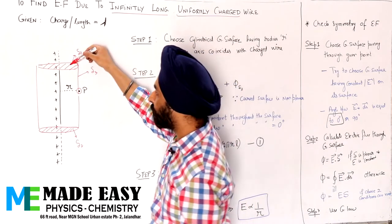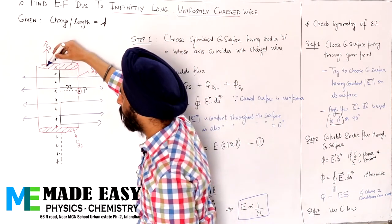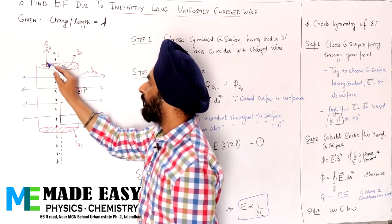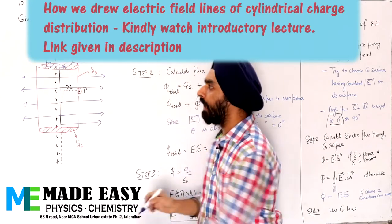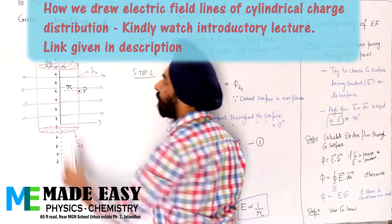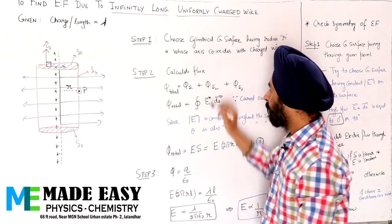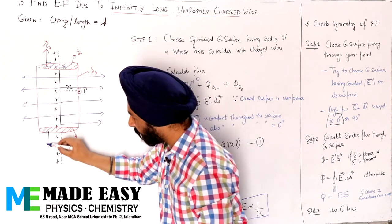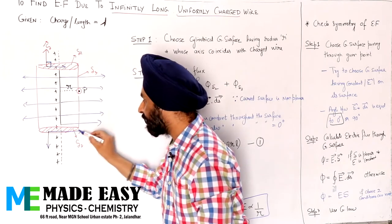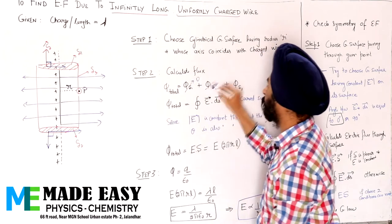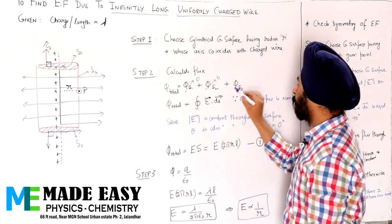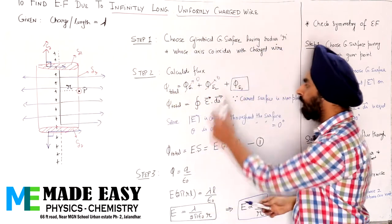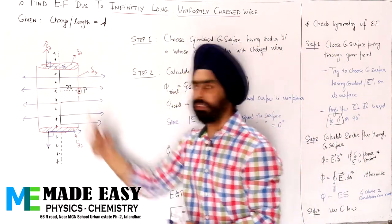For surface 1 — it is a plane surface. The area vector points perpendicular to the plane, but the electric field points radially outward, so the angle between the area vector and electric field is 90°. Therefore, flux through surface 1 is zero. Similarly, for surface 2, the area vector points in one direction and the electric field in the radial direction — angle is 90°, so flux through surface 2 is also zero.